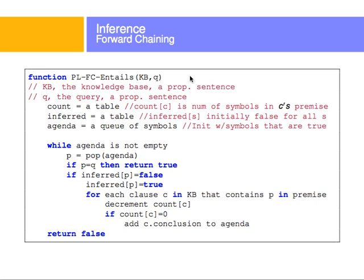The forward chaining algorithm — I'll show it working in a second. What it does is it takes all possible symbols in my knowledge base of horn clauses and tries to infer, at each step, how many symbols are true. Once it goes through all the rules, if it finds that my query is implied — remember, the goal is that I have a knowledge base and I'm asking it a true-false question — if after evaluating all the facts I end up with a true statement implying my query, then I've proved the query.